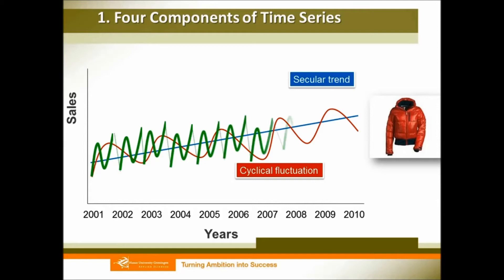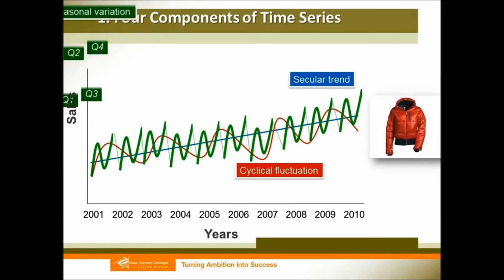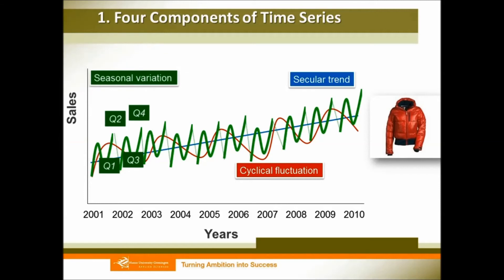And within each year, our product is sensitive to the seasons, so different seasons have different sales amounts. Like for the winter clothes, in winter or autumn the sales increase, while in spring and summer the sales decrease. We call this seasonal variation.